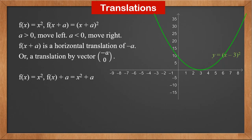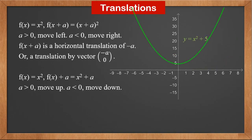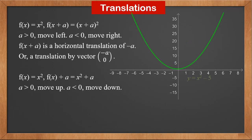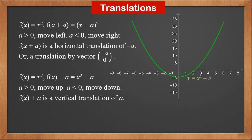f(x) + a is x² + a. From the section on quadratic graphs, we know its graph is the graph of x² moved along the y-axis by a. If a is positive, it moves up; if a is negative, it moves down. This is y = x² moved up by 5 units, becoming y = x² + 5. Therefore, f(x) + a is a vertical translation of a, or a translation by vector (0, a).